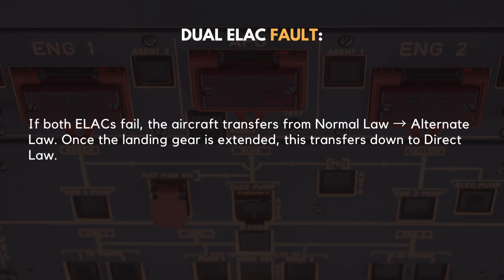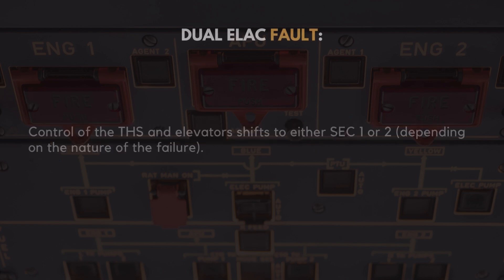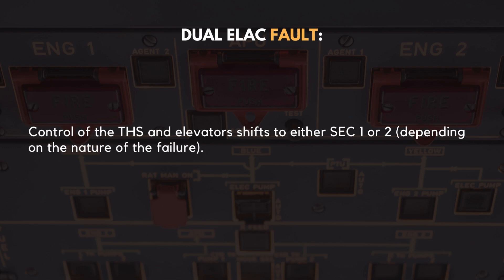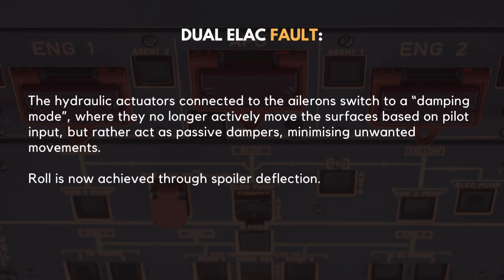If both ELACs fail, the aircraft transfers from Normal Law to Alternate Law. Once the landing gear is extended, this transfers down to Direct Law. Control of the THS and elevators shifts to either SEC 1 or 2, depending on the nature of the failure. The hydraulic actuators connected to the ailerons switch to a damping mode, where they no longer actively move the surfaces based on pilot input, but rather act as passive dampers, minimizing unwanted movements. Roll is now achieved through spoiler deflection.